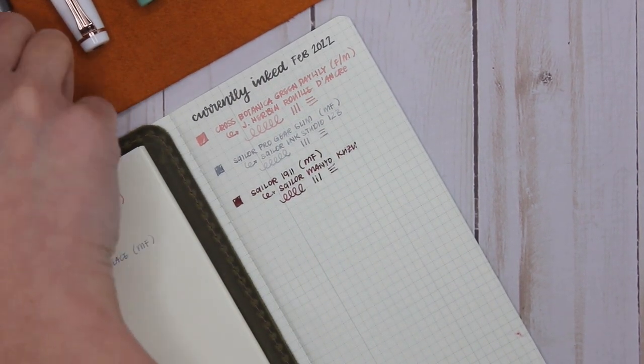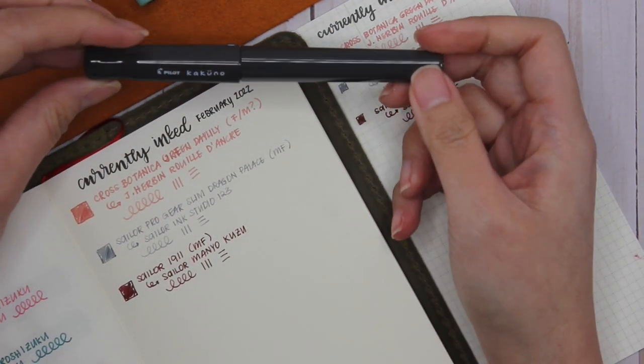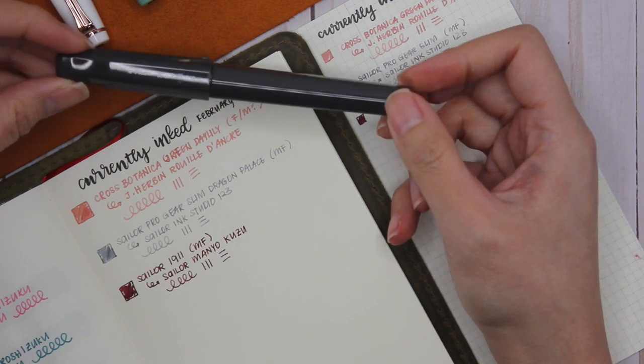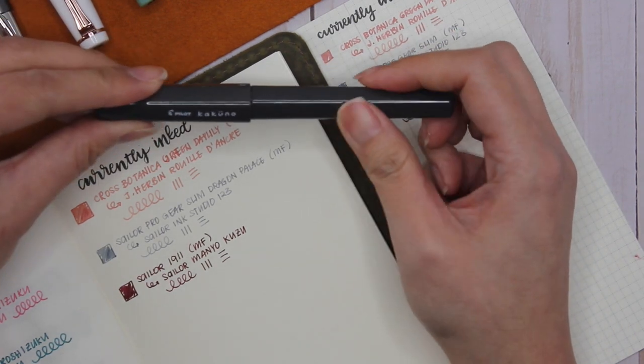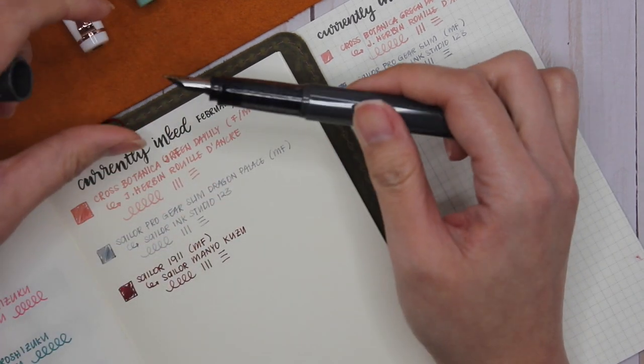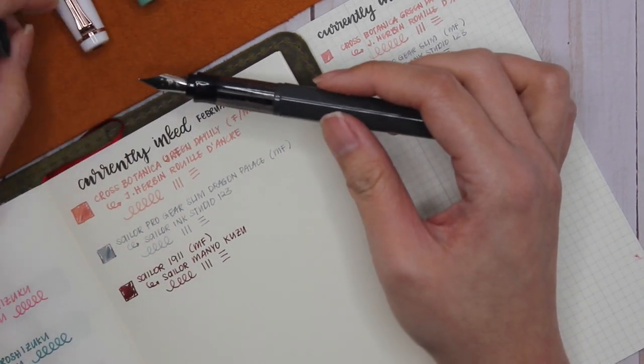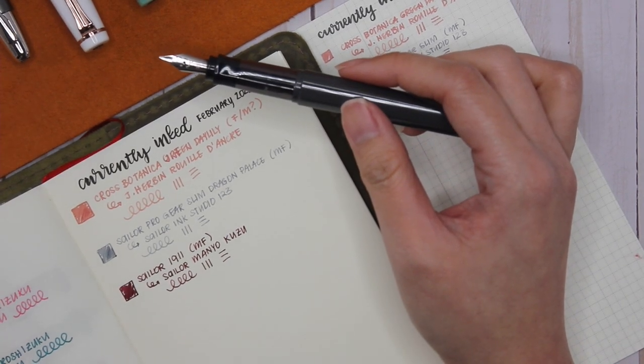So then moving on to my Pilot—this is my Pilot Kakuno. I'm not sure how you want to pronounce it, but I bought this one off of Amazon and it originally had a fine, but I swapped it for an extra-fine nib that I had on a clear Pilot Kakuno.